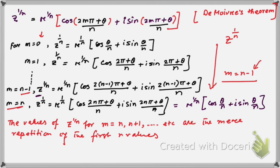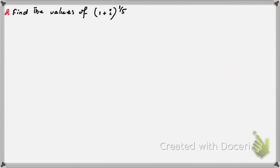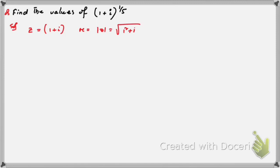Let us take an example: find the values of (1 + i)^(1/5). Let z = 1 + i. First, express this in polar form. The modulus r = √(1² + 1²) = √2. Comparing with a + ib, we have a = 1, b = 1. So tan α = 1/1 = 1, and since tan(π/4) = 1, we get α = π/4.